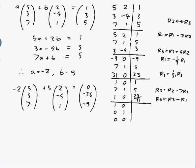Row 2 becomes row 2 minus 7 of row 1. So, let's see, 5 minus 7 of 1 is -2.